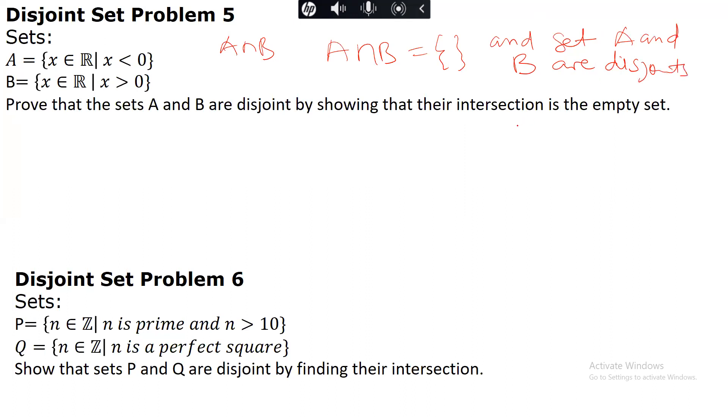This could be a bit tricky because for any real number x, it cannot be both less than zero and greater than zero simultaneously. So you can see that could be a bit tricky but I think it's very straightforward. Now let's look at problem six.